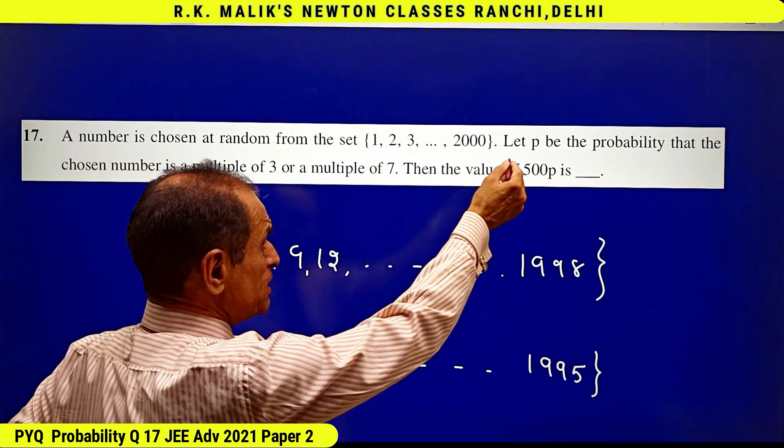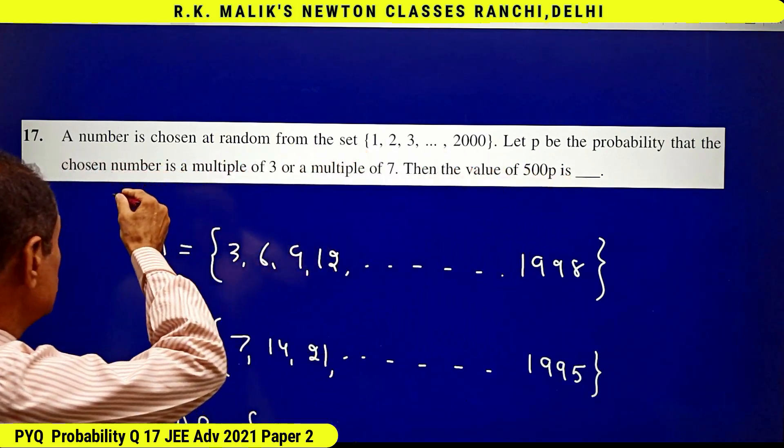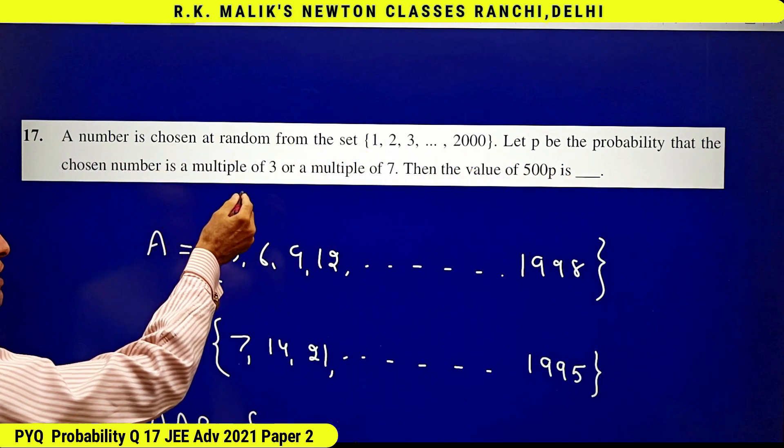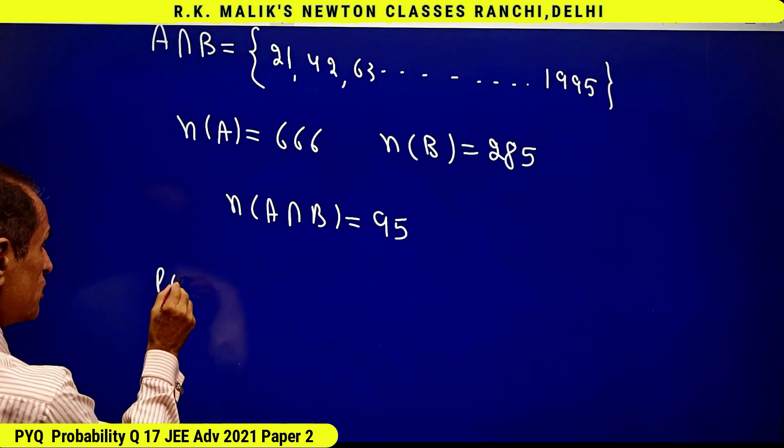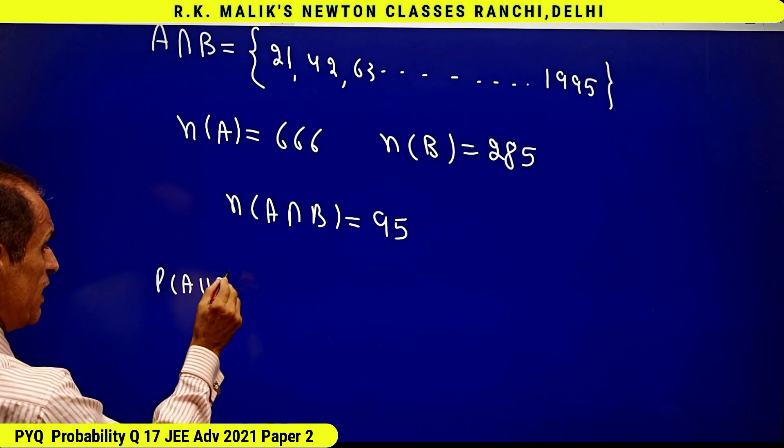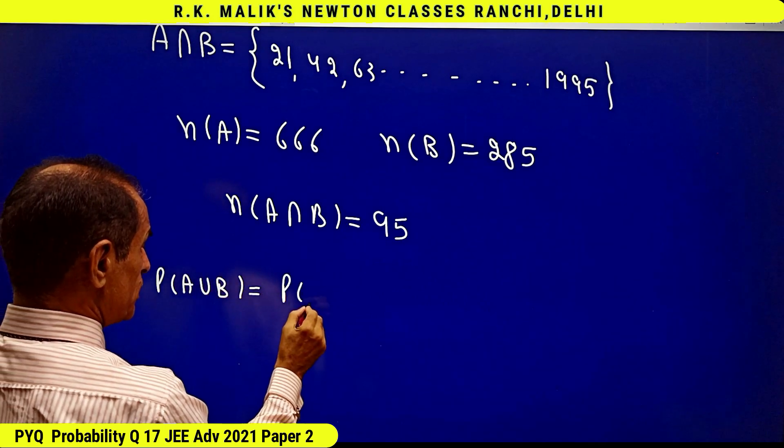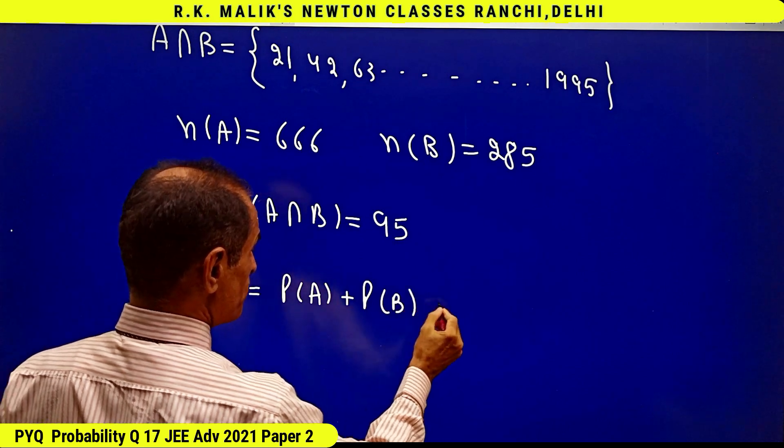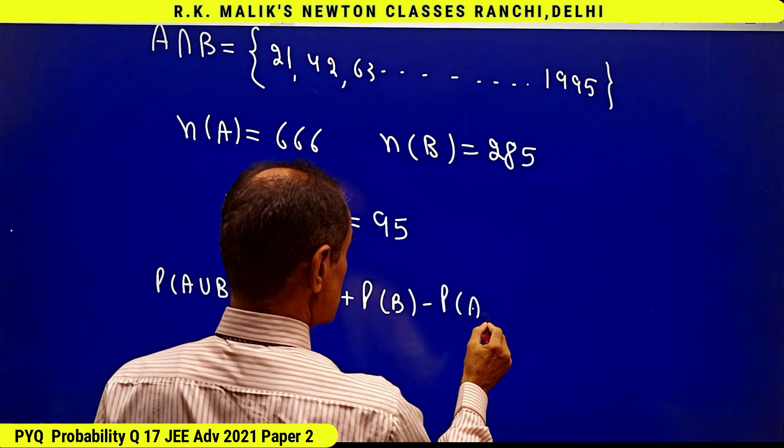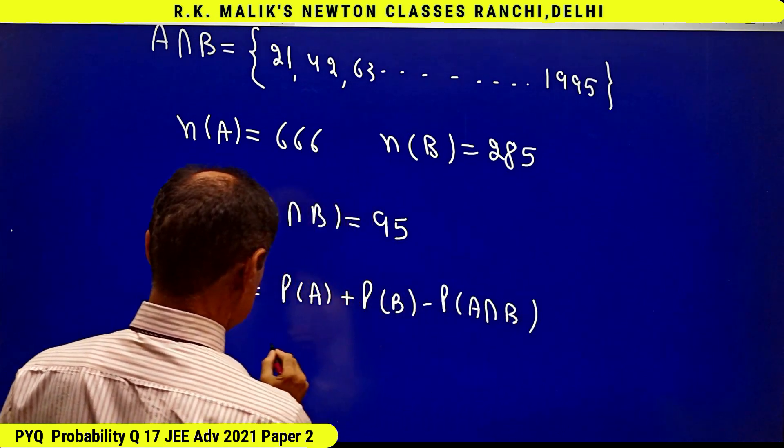As it is given that p is the probability that the chosen number is multiple of 3 or multiple of 7, hence probability of A union B will be probability of A plus probability of B minus probability of A intersection B.